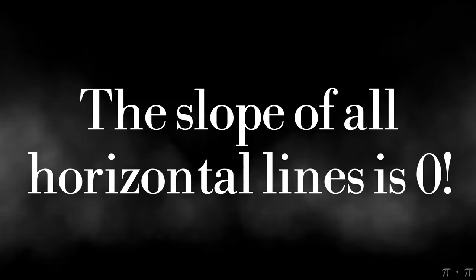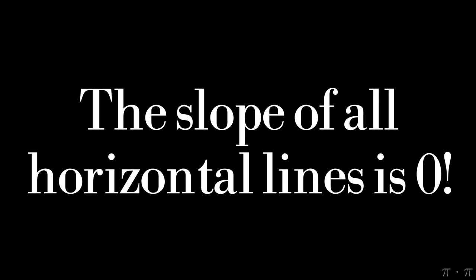Now, please commit this fact to memory. The slope of all horizontal lines is zero. It doesn't matter whether they're y equals two or y equals three or y equals negative two thirds. If you have a horizontal line, the slope will always be zero.